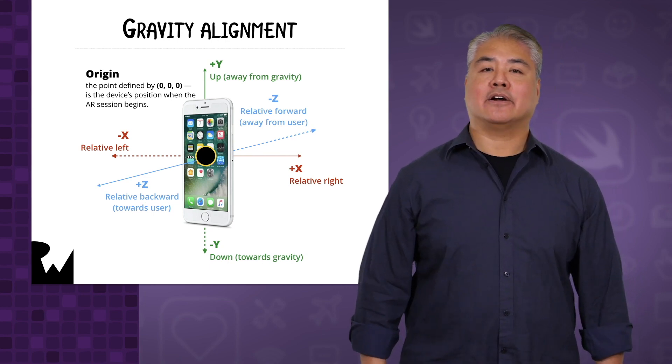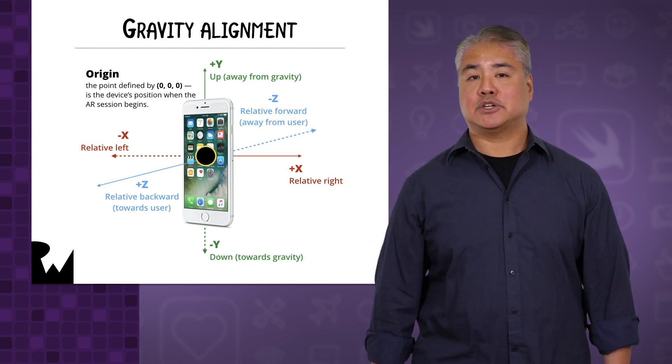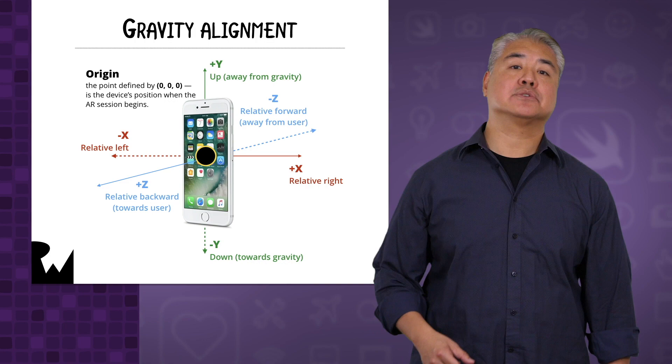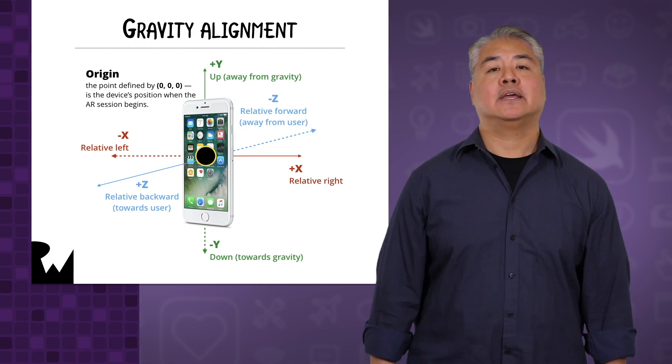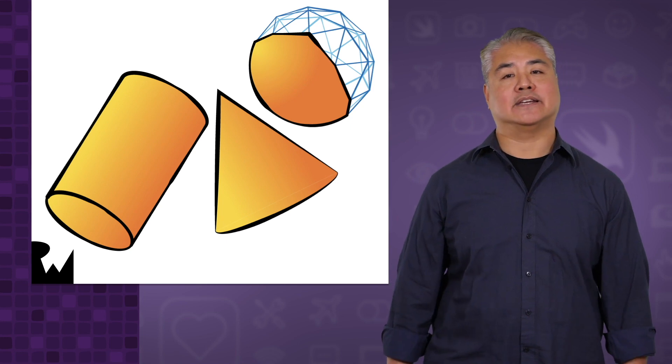As you saw when you ran the ARKit template app, ARKit can draw complex 3D shapes covered with graphic textures such as the spaceship. ARKit can also draw simple geometric shapes, things like cubes, spheres, cones, cylinders, and so on. In SceneKit, they're called geometries. You're going to use them to get familiar with adding objects into an augmented reality scene.